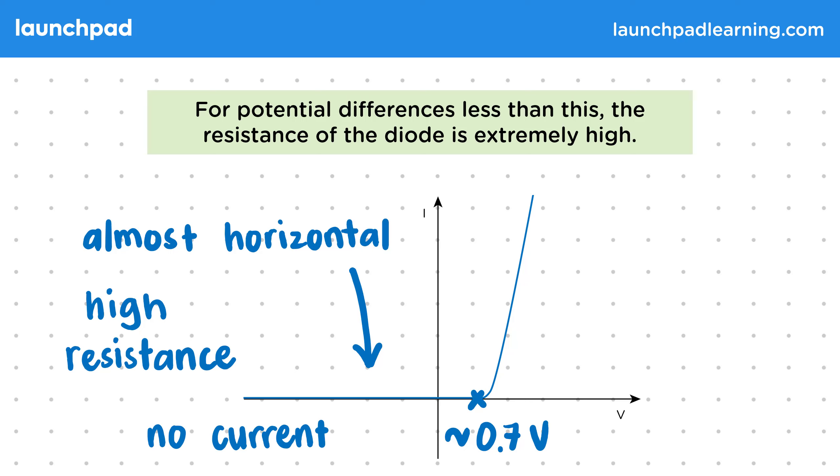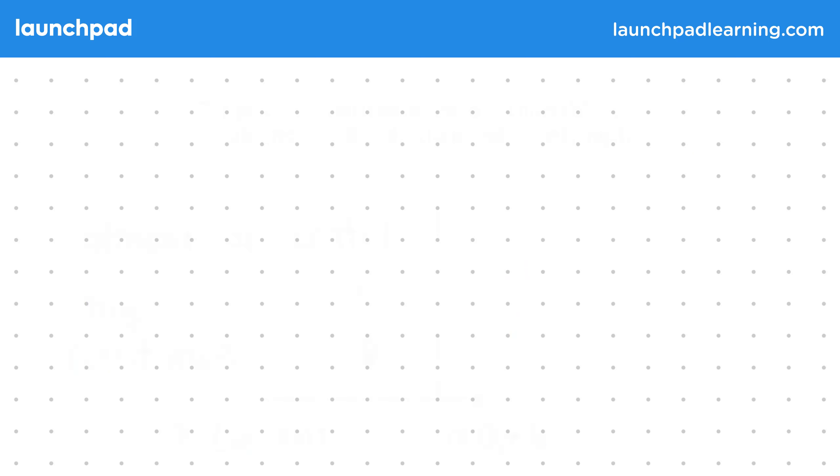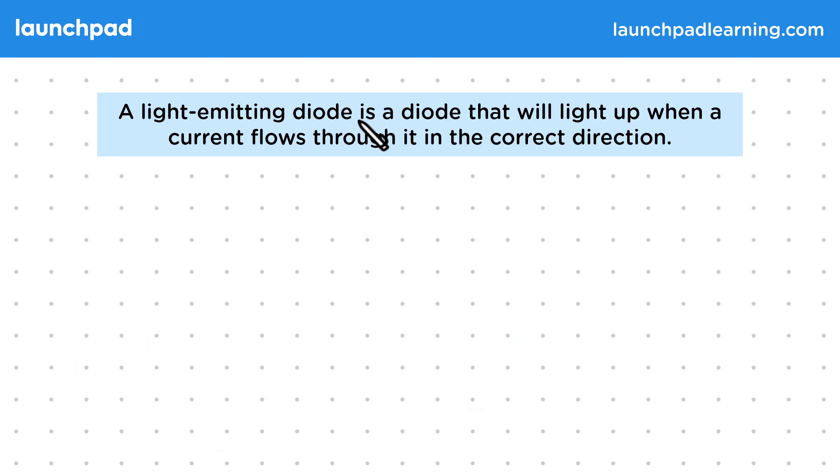So are there any other devices that work like this? A light emitting diode is a diode that will light up when a current flows through it in the correct direction.